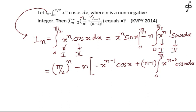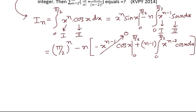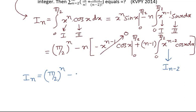With limits 0 to π/2 on both parts, we observe that the term involving minus x to the power (n-1) times cos x vanishes at both limits — cos(π/2) = 0 and the lower limit gives 0 — so that whole part equals 0. We can therefore see that the remaining integral is exactly I_{n-2}, giving us the reduction formula: I_n = (π/2)^n minus n(n-1) I_{n-2}.